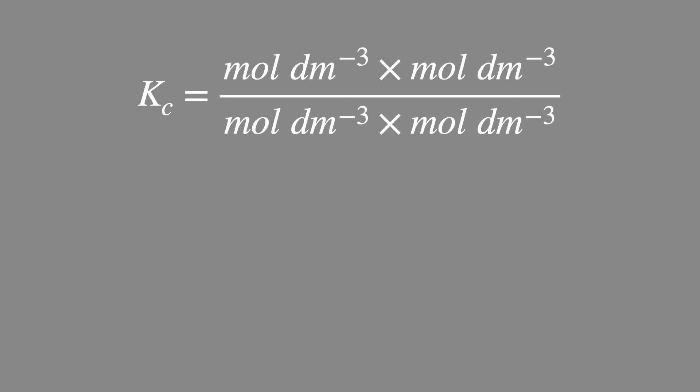Once we have those units in the equation it's possible to cancel them out and be left with the overall unit for KC. In this situation there's an equal number on the top as there is on the bottom so that all the units cancel leaving us with no actual units for KC.